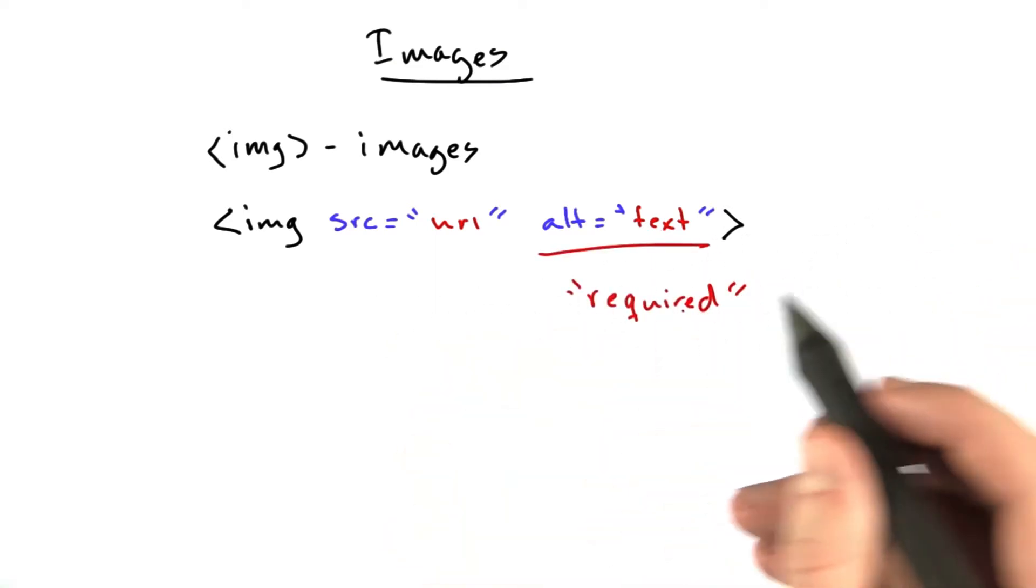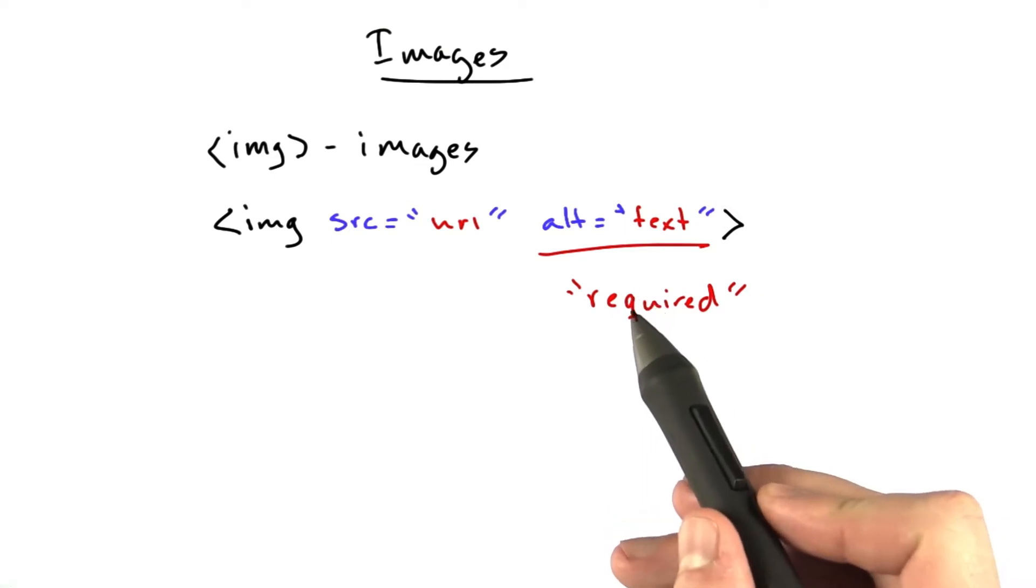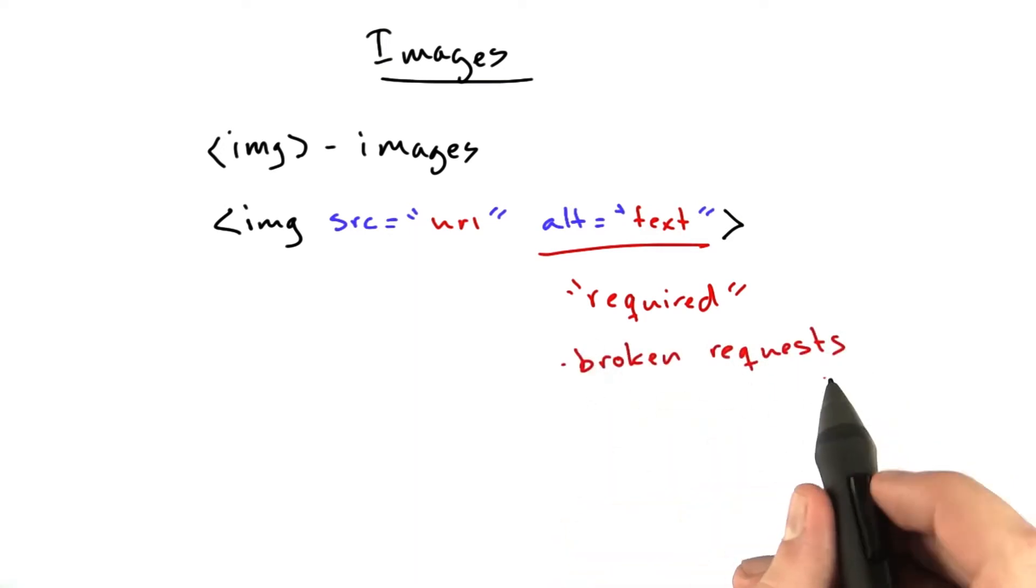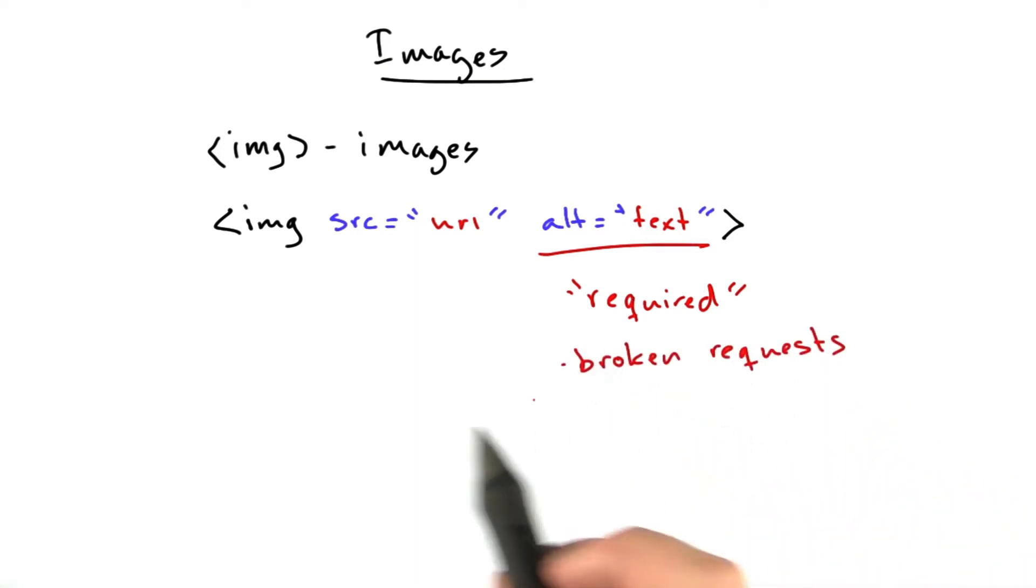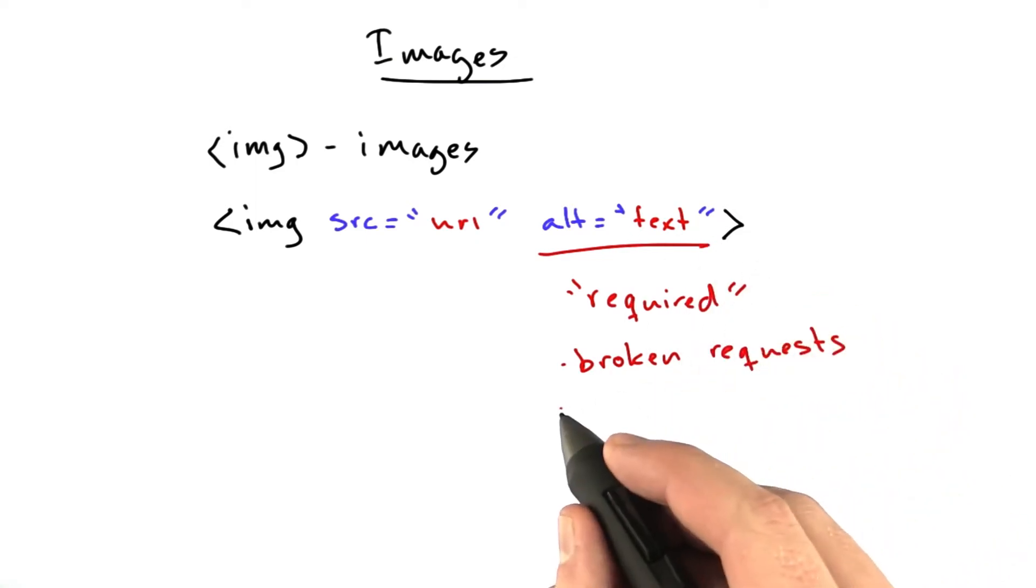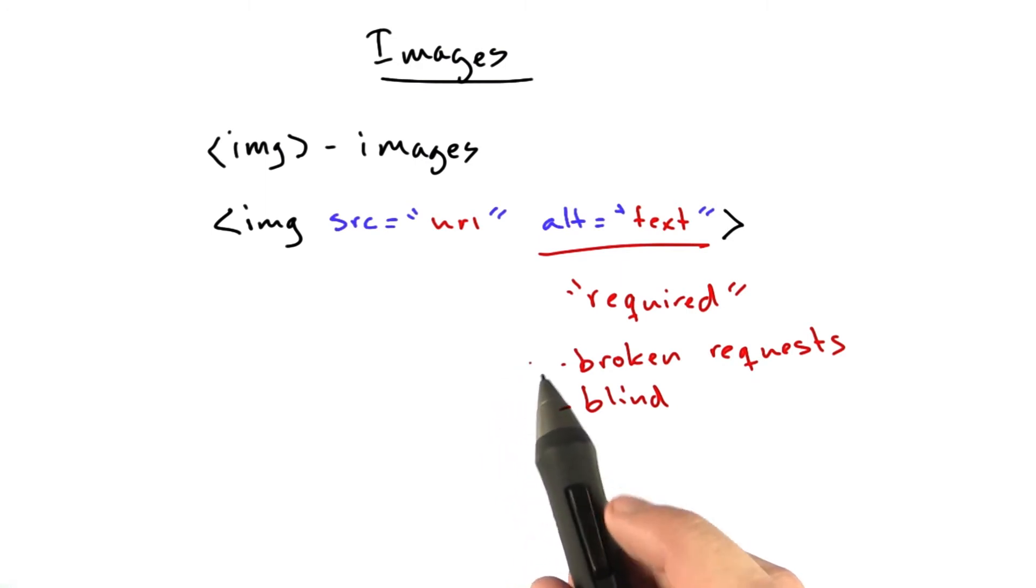It's required in the sense that HTML parsers will complain at you if it's not there. Nothing will break, but it's really nice to include it. It's for broken requests, like if our browser requests a URL that doesn't exist, this is the text that gets displayed. And it's also for blind people. It doesn't take much to add alt text, and it'll make somebody's life or day at least mildly easier.